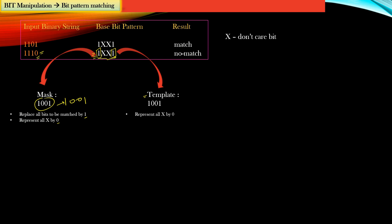The second thing we need to compute is the template. To compute the template, we follow only one rule: in the base bit pattern, replace all the don't-cares by zero. So the template value that we get is 1001.